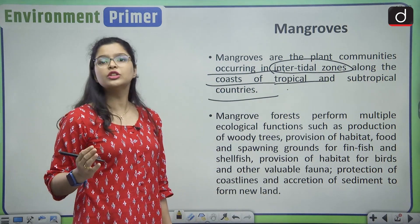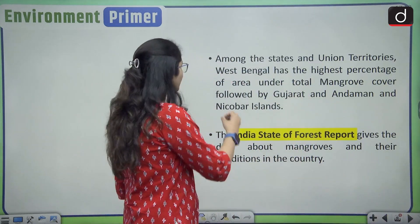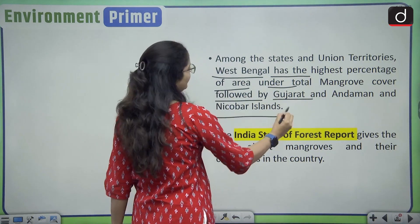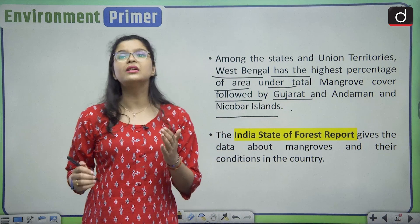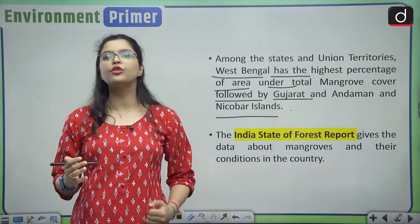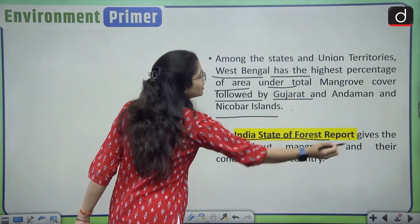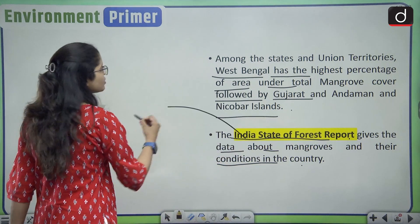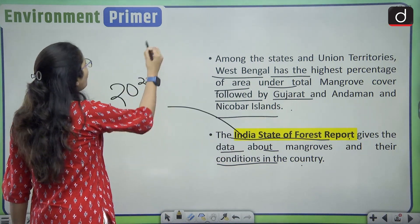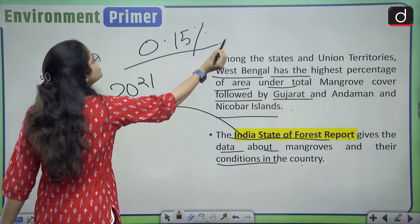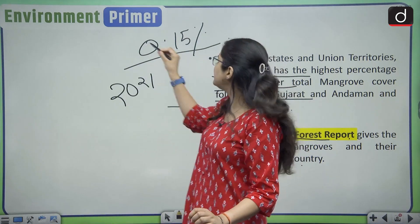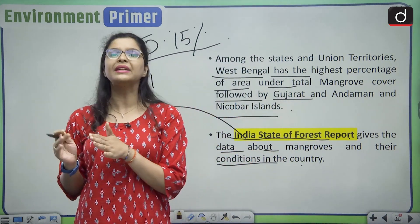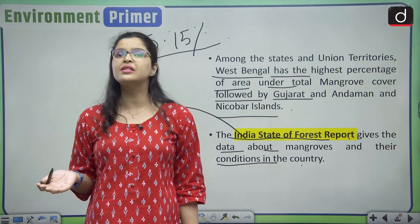If I talk about the location of mangroves in India, they are found in West Bengal, which has the highest percentage of area under total mangrove cover, followed by Gujarat and Andaman and Nicobar Islands. The status of mangroves in India is declared by the India State of Forest Reports. As per the 2021 report, only 0.15 percent of area is covered by mangrove forests in India, which is why there is an immediate need to preserve them.